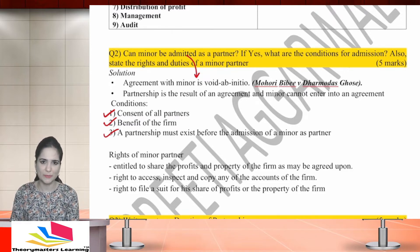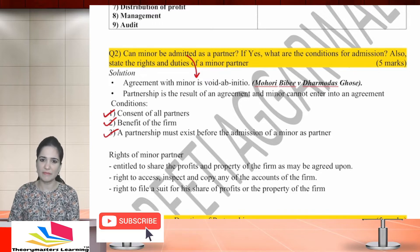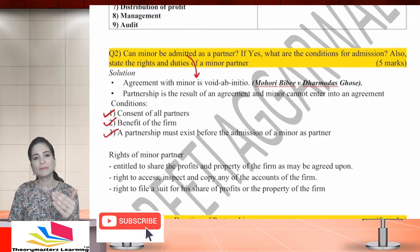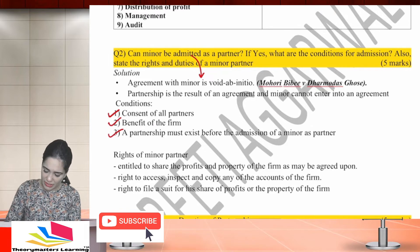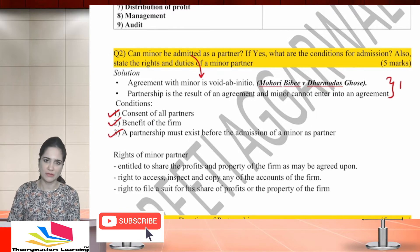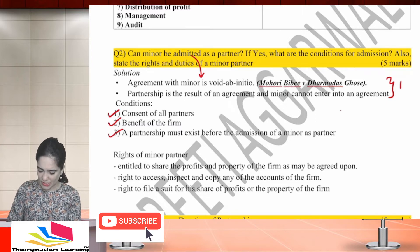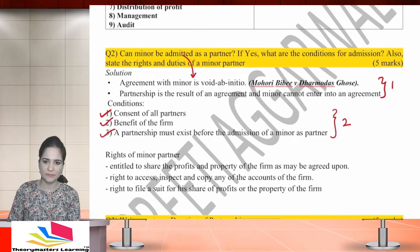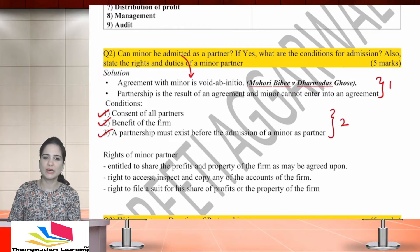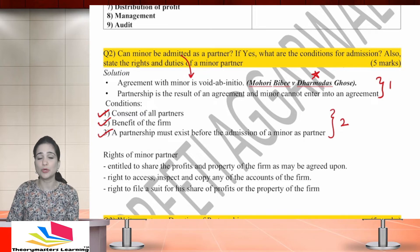Now, for the marking scheme — it's a five-mark question. I have given you only the main points; you need to elaborate on them. If you have written the introduction, give yourself one mark. If you have correctly written the conditions — consent of all partners, benefit of the firm, partnership must be in existence — give yourself two marks. Writing the case law Mohri Bibi versus Dharmu Das Ghosh will give you an edge over other students.